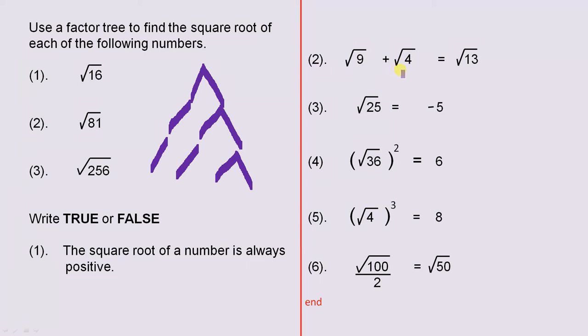Now you have to write true or false for this one. The square root of 9 plus the square root of 4 equals the square root of 13. Now you know how to calculate each of those two so you'll know for sure whether that's true or false.